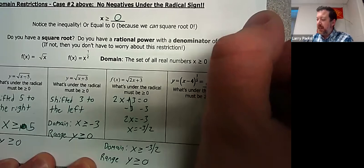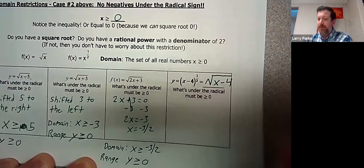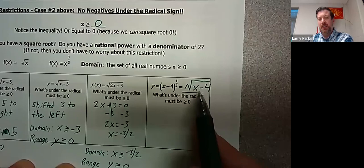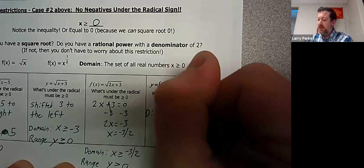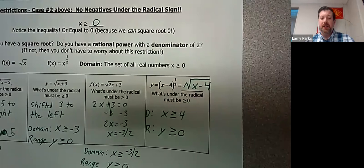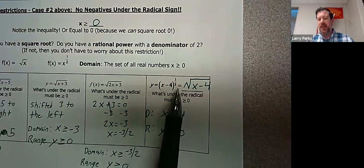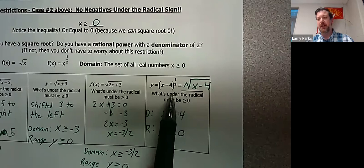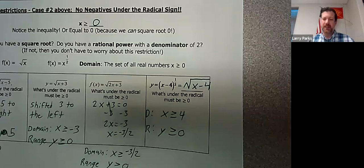Anything to the one-half is the same as the square root of x minus four. Setting this equal to zero — what number minus four is zero? That's four. So the domain is all numbers bigger than or equal to four, and the range is y ≥ 0. Now you may be thinking: is the range always y ≥ 0? No — if I put a plus one here, the range would be one and up; plus two, it's two and up. We're not shifting up or down in this case, so the range stays bigger than or equal to zero.